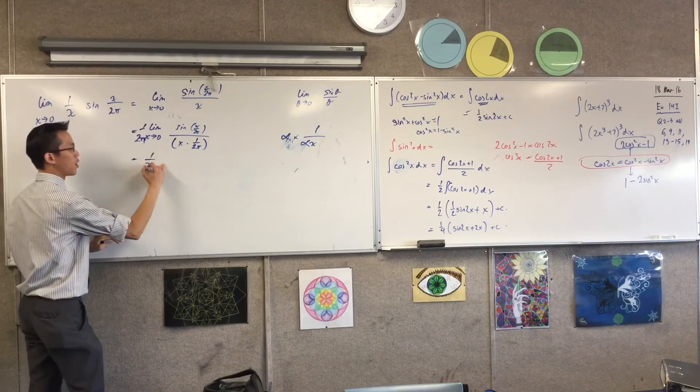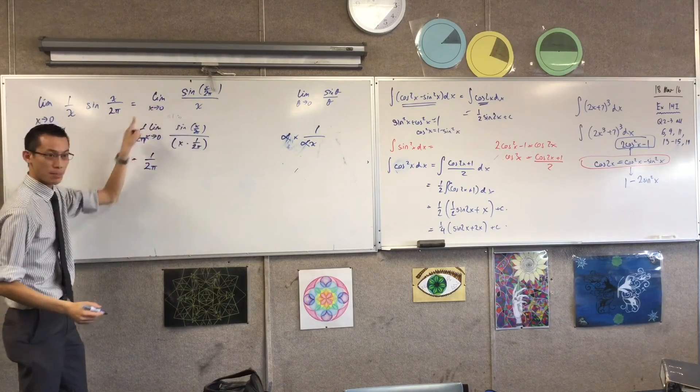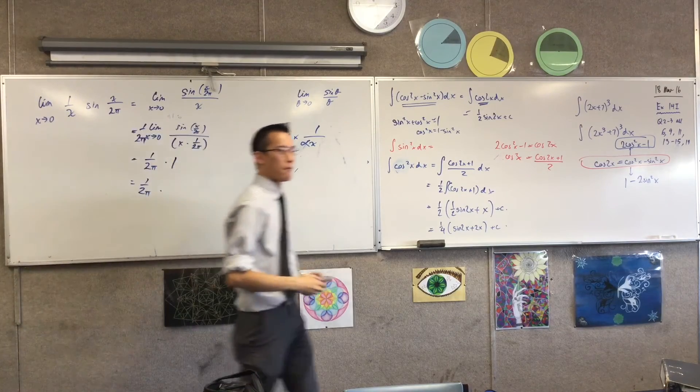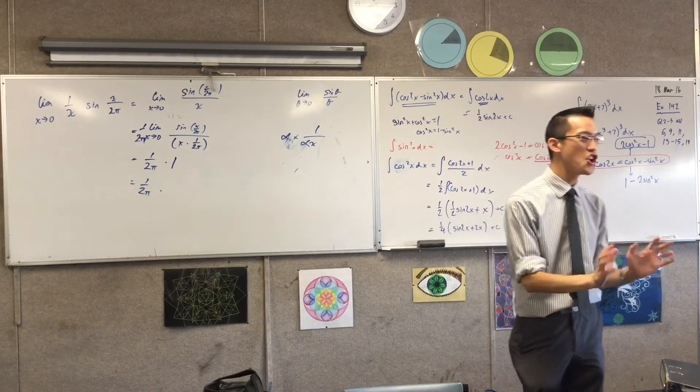So now I've got my 1 over 2 pi. What does this become? 1. So there is my limit. Now, people have gotten confused by this. It's not complicated.